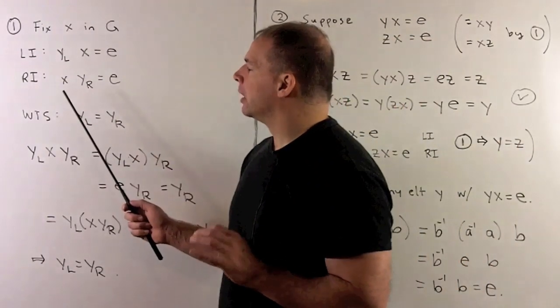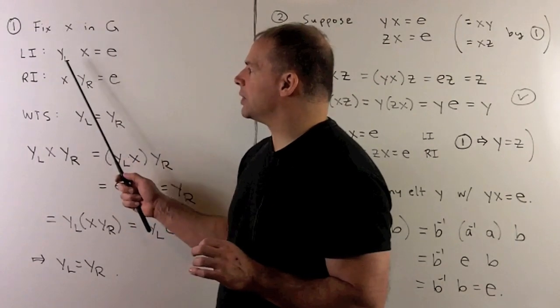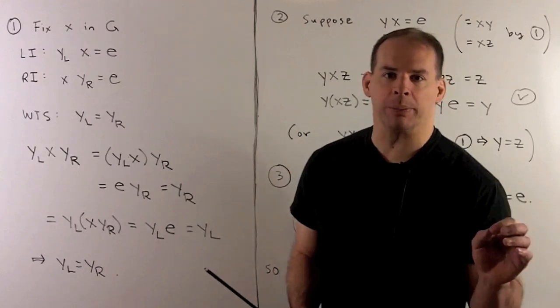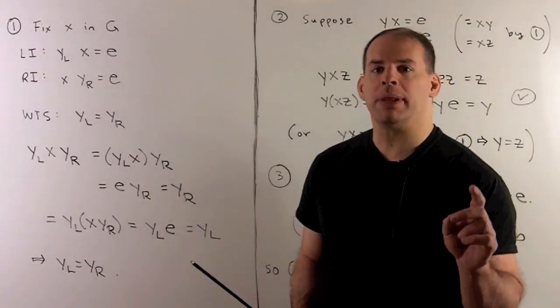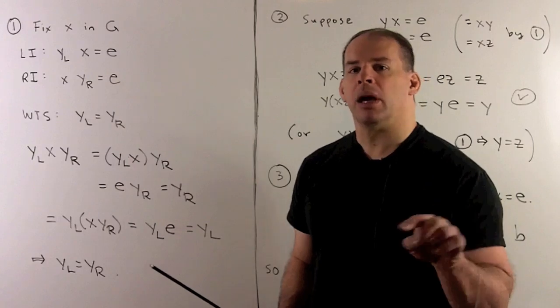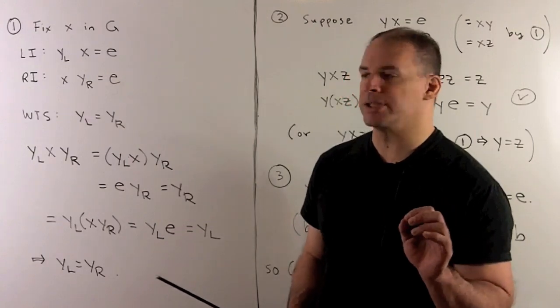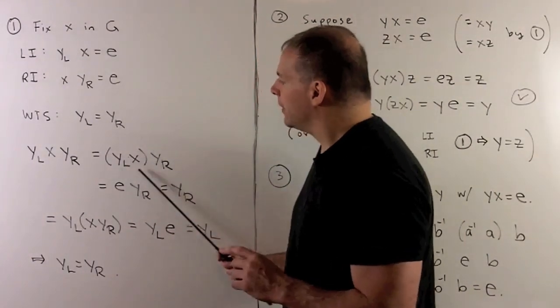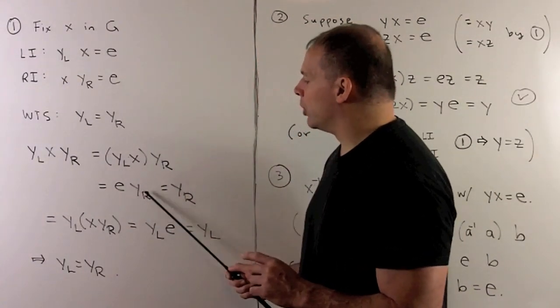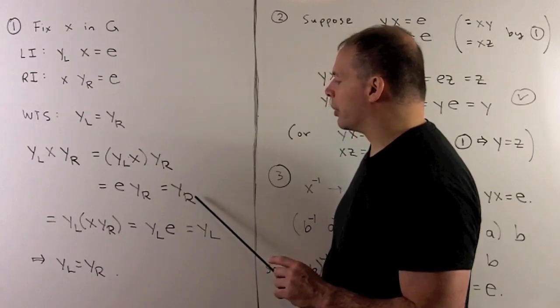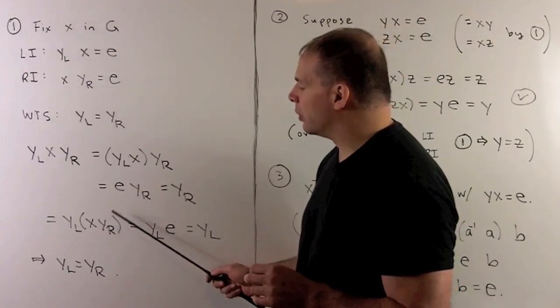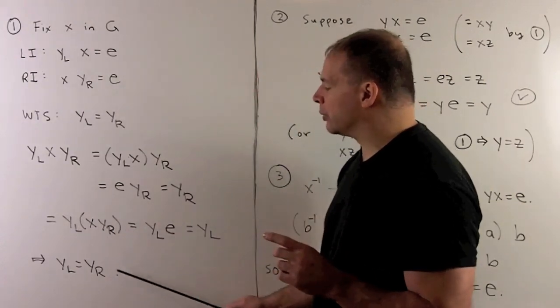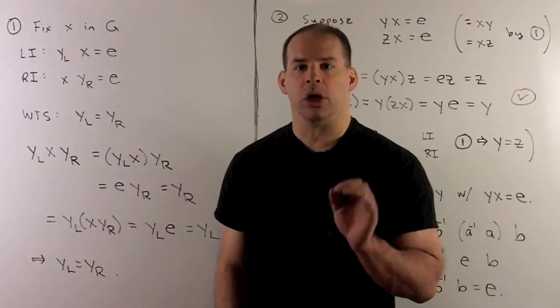We'll fix an X in the group, and we'll assume we have a left inverse Y sub L and a right inverse Y sub R. I want to show that Y sub L equals Y sub R. So we're going to multiply Y sub L times X times Y sub R, and we group terms in two different ways. First, if we group Y sub L with X, then that becomes the identity element. We multiply by Y sub R, we get Y sub R. If we group X with Y sub R, then this is going to become Y sub L, and we have that Y sub L equals Y sub R, and that's what we're looking for.